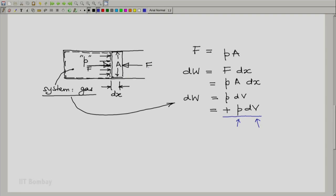Whereas, if the external force slightly increases, then the piston will move in compressing the gas. Volume will reduce, dV will be negative, and dW will be a numerically negative quantity. So, this is an example of a two-way work interaction.